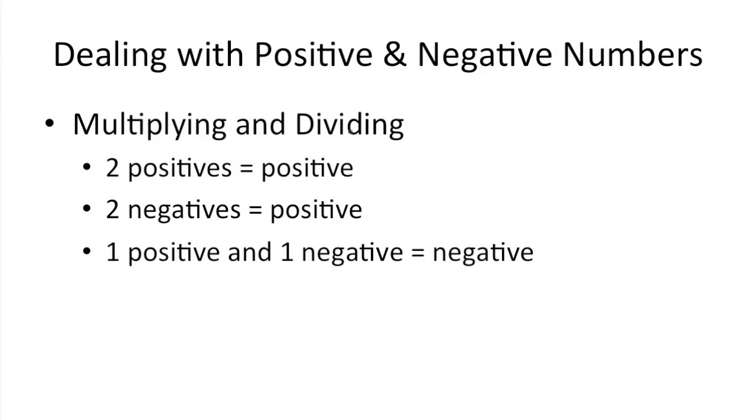So moving on, when we're multiplying and dividing numbers that happen to be negative and positive, these are some of the rules that you need to follow. Obviously, when you have two positive numbers and you're multiplying or dividing them, you'll always get a positive answer. So stuff like 2 times 2 is 4, or 4 divided by 2 is 2. It's pretty straightforward.